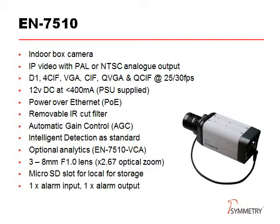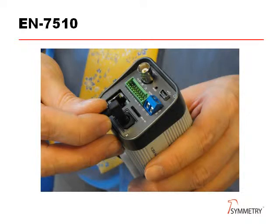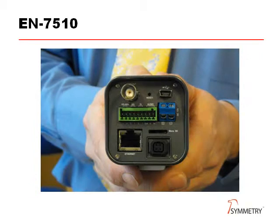A micro SD card can be added for local storage of JPEG images. It has one alarm input and one output, and is provided with a 3-8mm zoom lens. The lens is supplied with the camera and uses a standard CS mount. The lens cable is plugged in at the back of the housing, and once a PoE connection is made, the camera is running. Other connections include a BNC for the analog video and plug-on terminal blocks for the digital inputs and outputs.